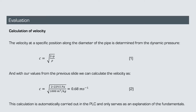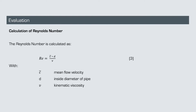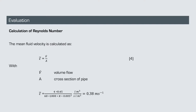With the measured value for the dynamic pressure at the center position we get a velocity of 0.68 meters per second, which is exactly the value in our data table. For the calculation of the Reynolds number we need the mean flow velocity. Importantly, the mean flow velocity is not the average of our measurements along the diameter, but rather the average velocity across the entire internal cross section of the pipe. We determine this by dividing the measured flow rate by the cross section area, giving us an average flow velocity of 0.38 meters per second.